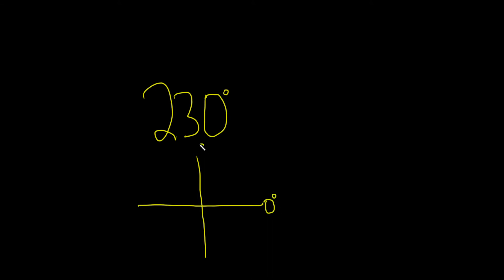This is 0, this is 90 degrees, this is 180 degrees, and this is 270 degrees. That should be enough because 230 is going to be over here somewhere, right? It's between 180 and 270.